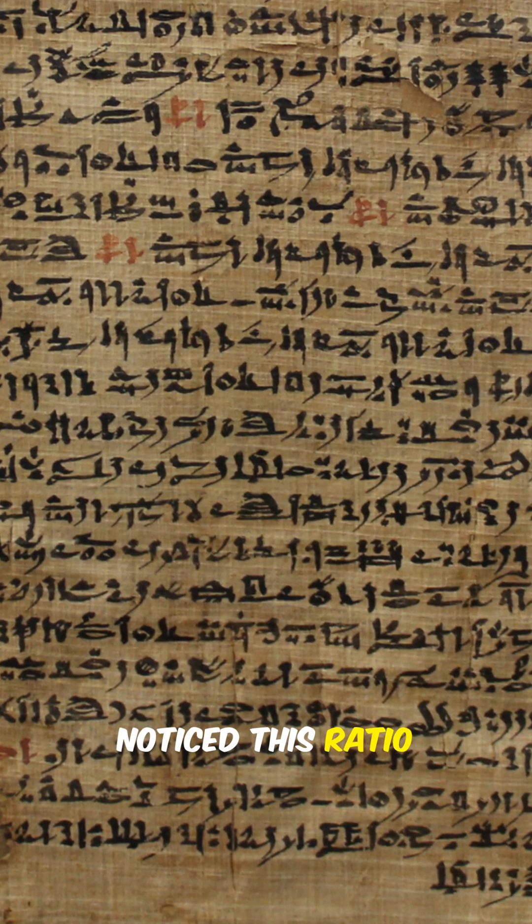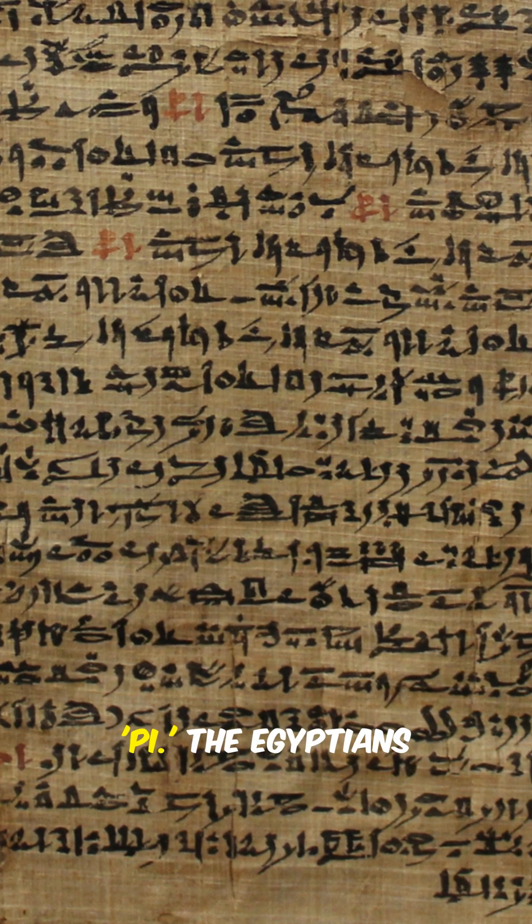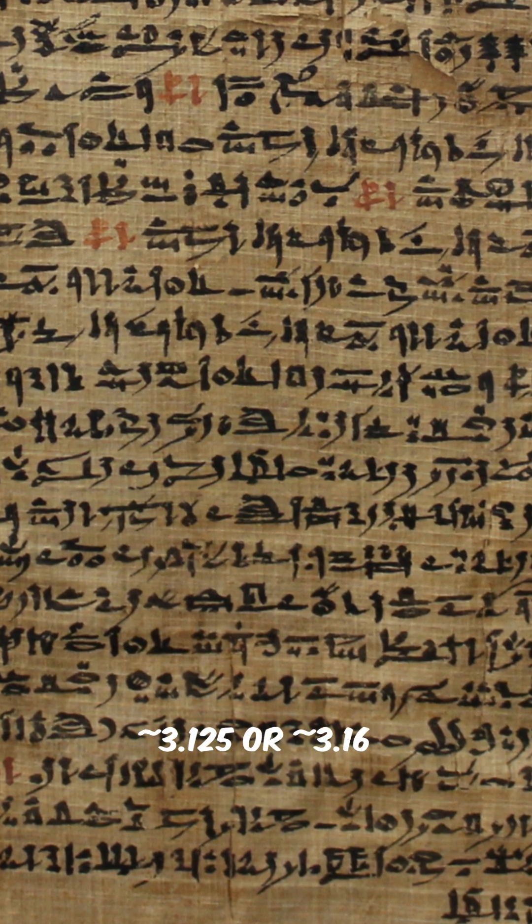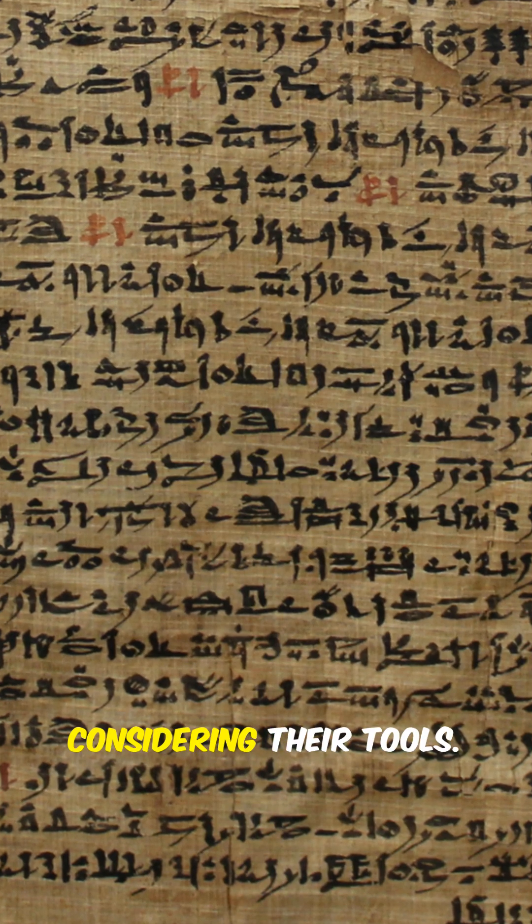Ancient civilizations noticed this ratio without calling it pi. The Egyptians and Babylonians had rough values, like approximately 3.125 or approximately 3.16, pretty close considering their tools.